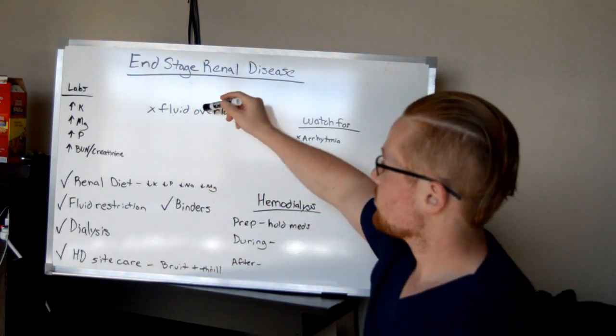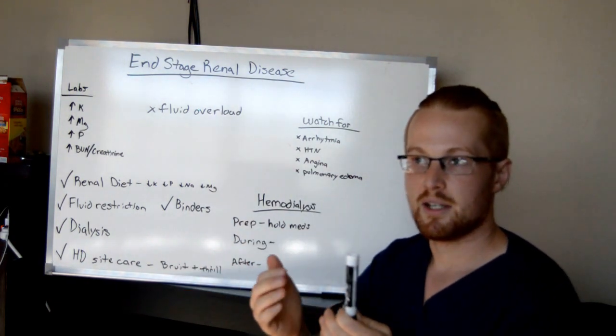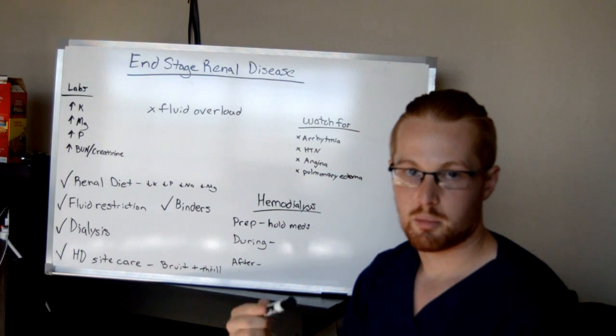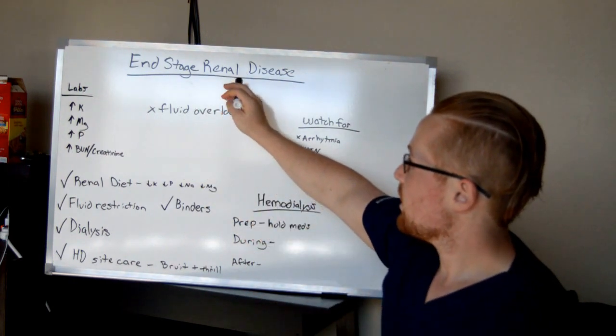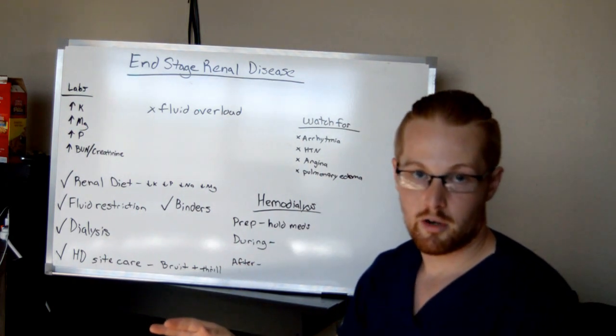Also, these patients are going to be at risk of fluid overload because they're not filtering out and maintaining their fluid balance because their kidneys aren't producing urine. In fact, people with end-stage renal disease sometimes produce either very little urine or no urine at all.